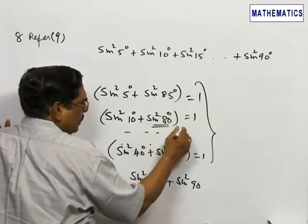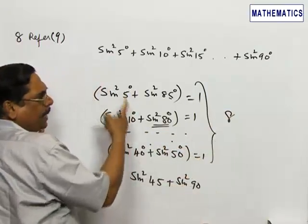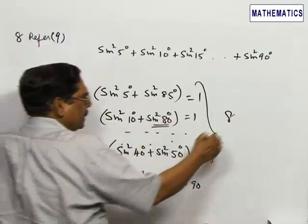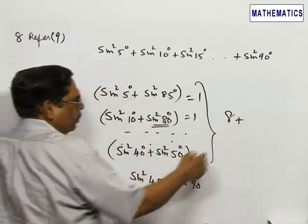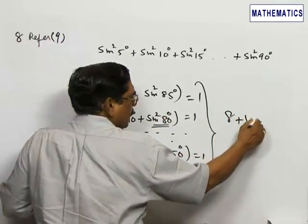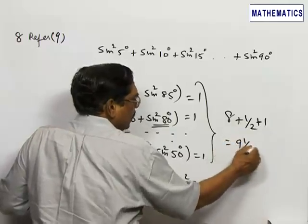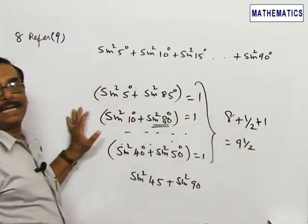There are many terms here. There will be 8 such pairs, therefore 8. Plus sine 45 equals 1 by root 2, sine squared is 1 by 2. Lastly, sine 90 equals 1, so this will be 9. Answer choice 3 is correct.